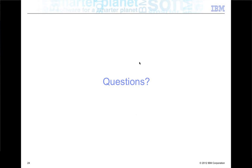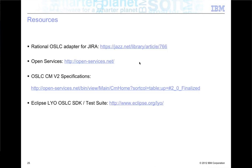We're coming close to the end of the call. The adapter itself is available on jazz.net — it is free to download. There are also trial versions of the CLM offering you could download if you don't already have that. JIRA offers free trials as well. The link takes you to an article on where to download, how to configure, install, and use it. Other references include the open-services site, the specification for change management, and where to get the LEO SDK directly.